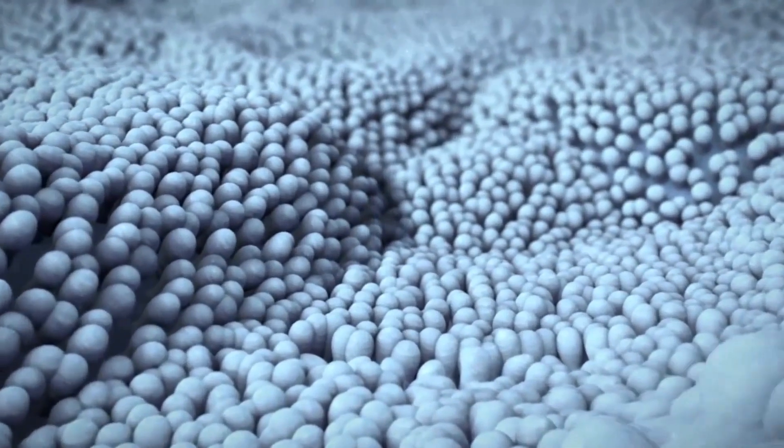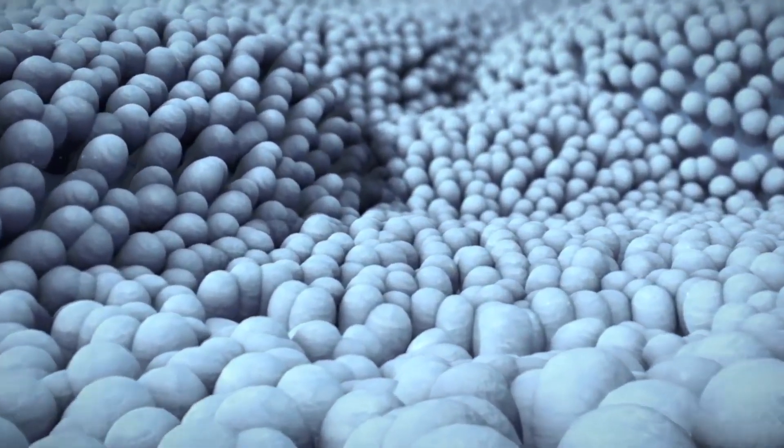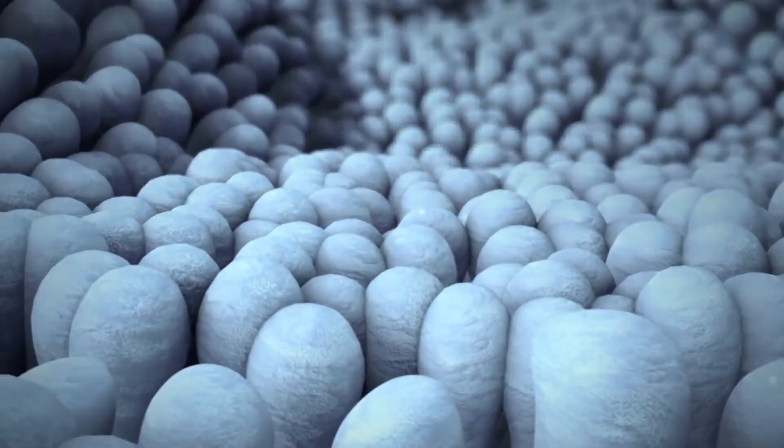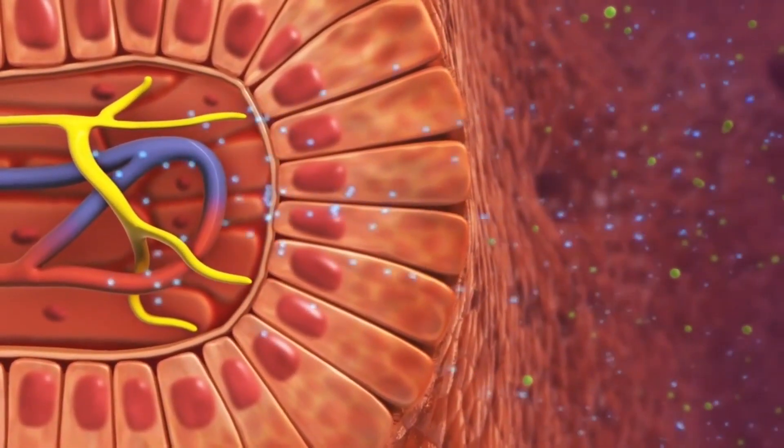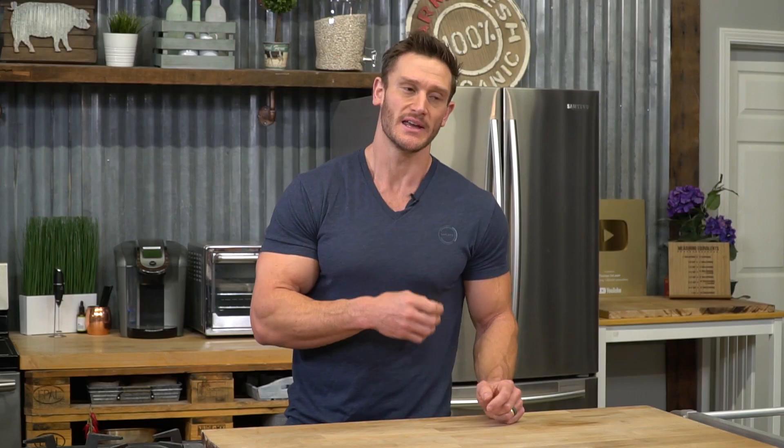Our gut is supposed to be sealed up with a mucosal layer. When that mucosal layer is weakened because of chronic inflammation, lipopolysaccharides — little compounds that live on the bacteria within our gut — get a chance to leak into the body. When they leak into the bloodstream, it triggers PAMP because as far as the body is concerned, it is a pathogen. It's bacteria that's supposed to be in our gut, not in our bloodstream, so PAMP gets elevated.